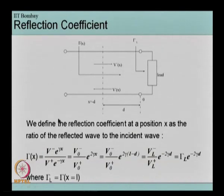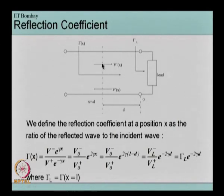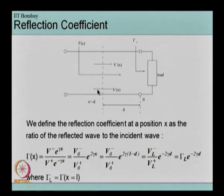As discussed in the previous slides, reflection coefficient is simply the ratio of the negative-travelling wave to the positive-travelling wave. Solving the transmission line equations gives two components: V+ and V−. V+ represents the component of the wave travelling in the positive x direction, while V− is the component travelling in the opposite direction. V+(x) is also known as the incident wave and V−(x) as the reflected wave.